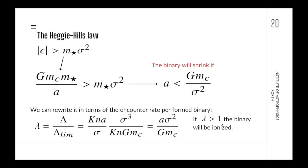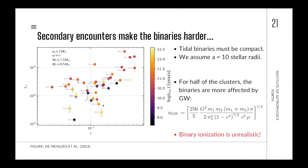This means the binaries will not be ionized — they will strongly tend to shrink further. For about half of these clusters, at an orbital separation of 10 stellar radii, the binaries lose more energy through gravitational wave emission than through the passage of nearby stars, making binary ionization absolutely unrealistic. This is a strong result: compact binary systems in globular cluster cores cannot be ionized by secondary stellar encounters.